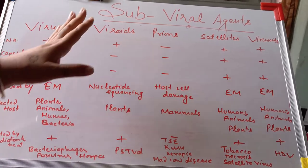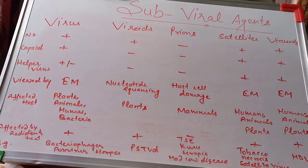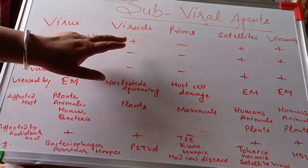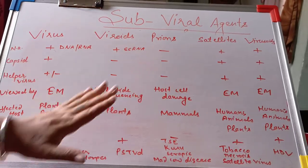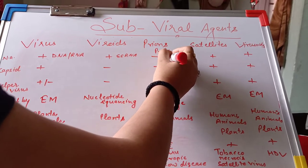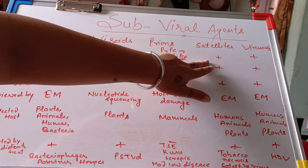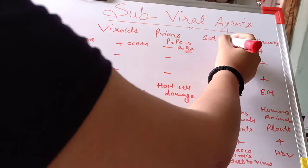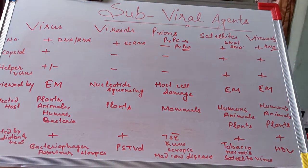In summary, comparing virus, viroids, prions, satellites, and virusoids: regarding nucleic acid — viruses have nucleic acid that may be DNA or RNA; viroids have only single-stranded RNA so nucleic acid is present; prions are infectious proteins so nucleic acid is absent — normal body proteins called PrPC get converted into infectious proteins by prions; satellites may have DNA or RNA; virusoids only have RNA.